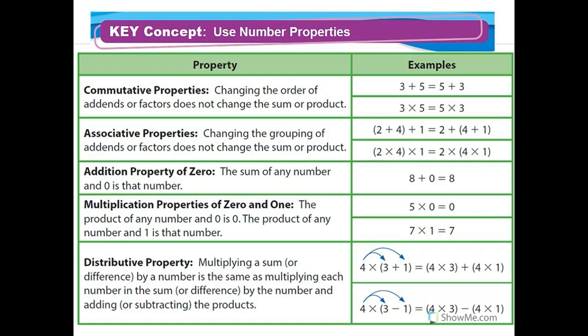Let's talk about some number properties in our key concept. I'm going to go through and read it to you — you can follow along. The commutative property: changing the order of addends or factors does not change the sum or product.